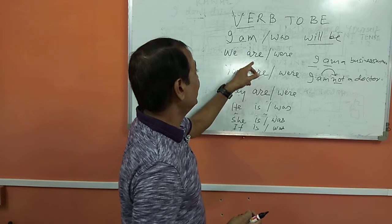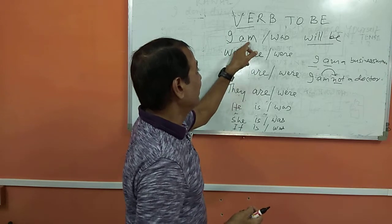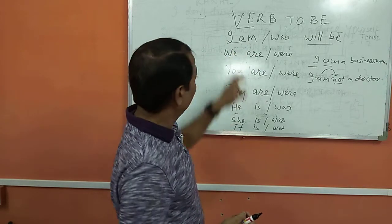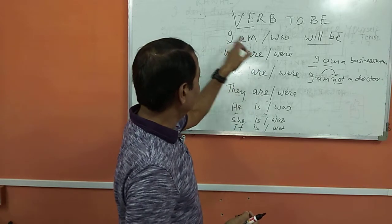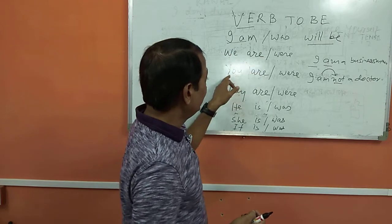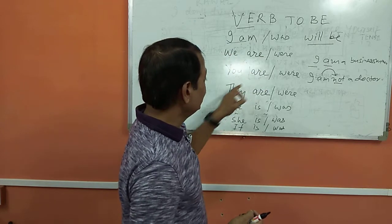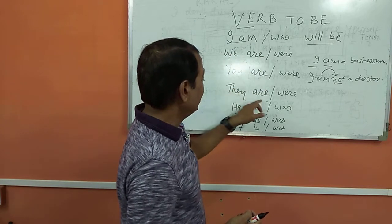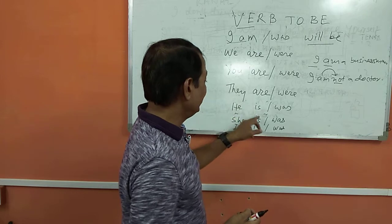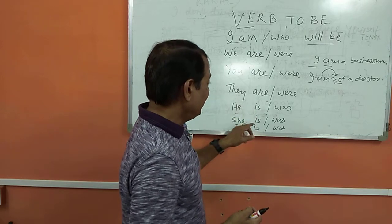We cannot say 'I are' and 'we am' — that will be a wrong sentence. We have to say: I am, we are, you are, they are, he is, she is, it is.